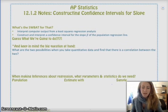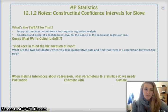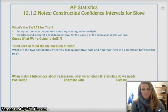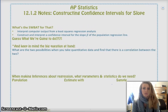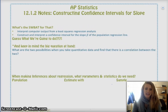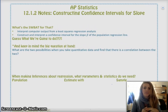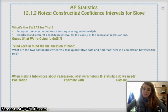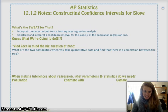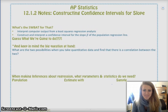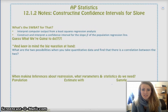Our SWBAT for today is we're going to be looking at computer output and making confidence intervals for the slope, the true slope, of a least squares regression line for a set of data, or for a relationship between two variables. I guess what we're going to do? More hypothesis tests, and we're going to be checking conditions and all that fun stuff. Same stuff we've always done for the last, like, at least four chapters.